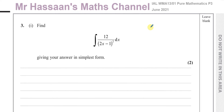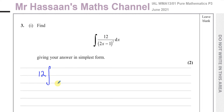Part one is asking us to integrate the expression 12 over (2x minus 1) squared with respect to x, giving your answer in its simplest form. We can write this with a negative index — the integral of 12 times (2x minus 1) to the power of negative 2 with respect to x, taking the 12 outside the integration sign.